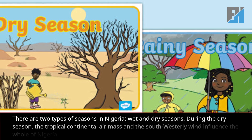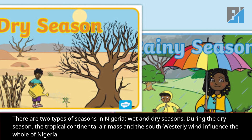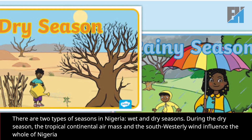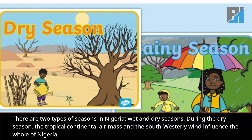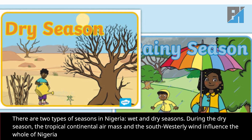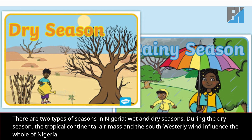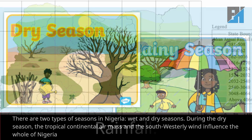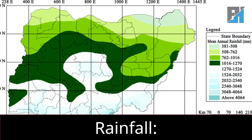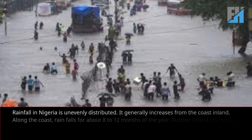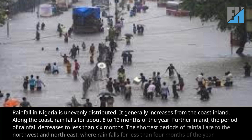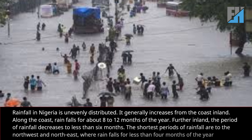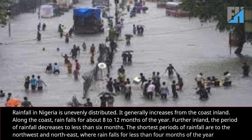There are two types of seasons in Nigeria: wet and dry seasons. During the dry season, the Tropical Continental air mass and the southwesterly wind influence the whole of Nigeria. Rainfall in Nigeria is unevenly distributed; it generally increases from the coast inland.